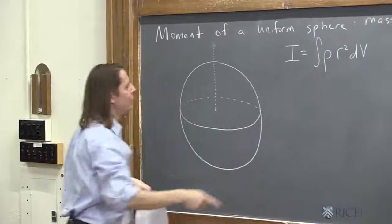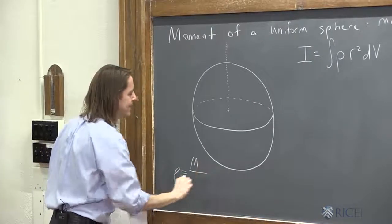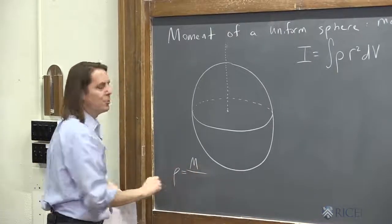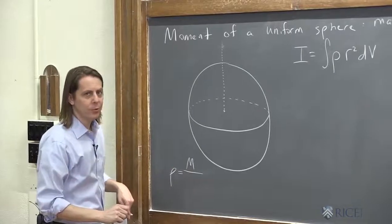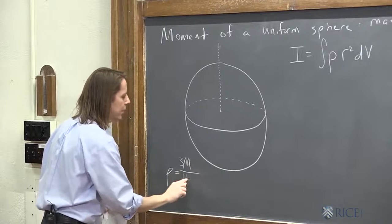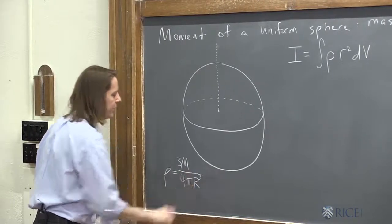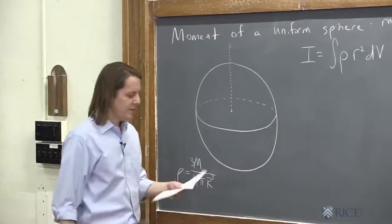So to get started, let's figure out what ρ is. ρ is the density, the mass total mass M over the volume of a sphere, which is 4/3 π R cubed. I'll put the three up top. So there's ρ, that's the easy part.